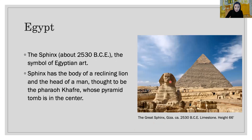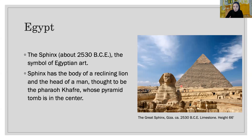The Sphinx is a symbol of Egyptian art — it represents stability, order, and endurance. It faces the rising sun, seeming to cast its immovable gaze down the centuries for all eternity. The Sphinx has the body of a reclining lion and the head of a man, thought to be the pharaoh Khafre, whose pyramid tomb is nearby. The Egyptians made the Sphinx as a guard to protect their king and queen's tomb pyramid.